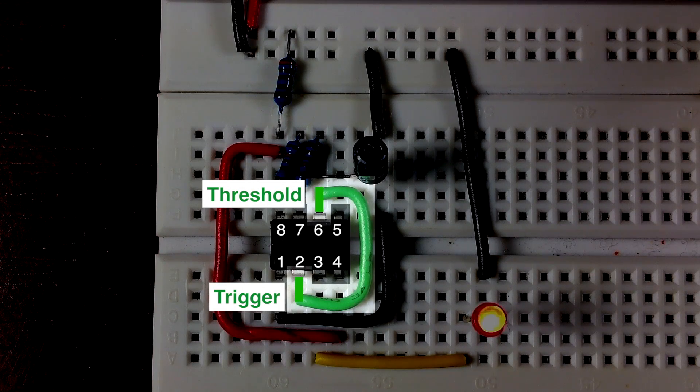We then want to connect the threshold at pin 6 to the trigger at pin 2.